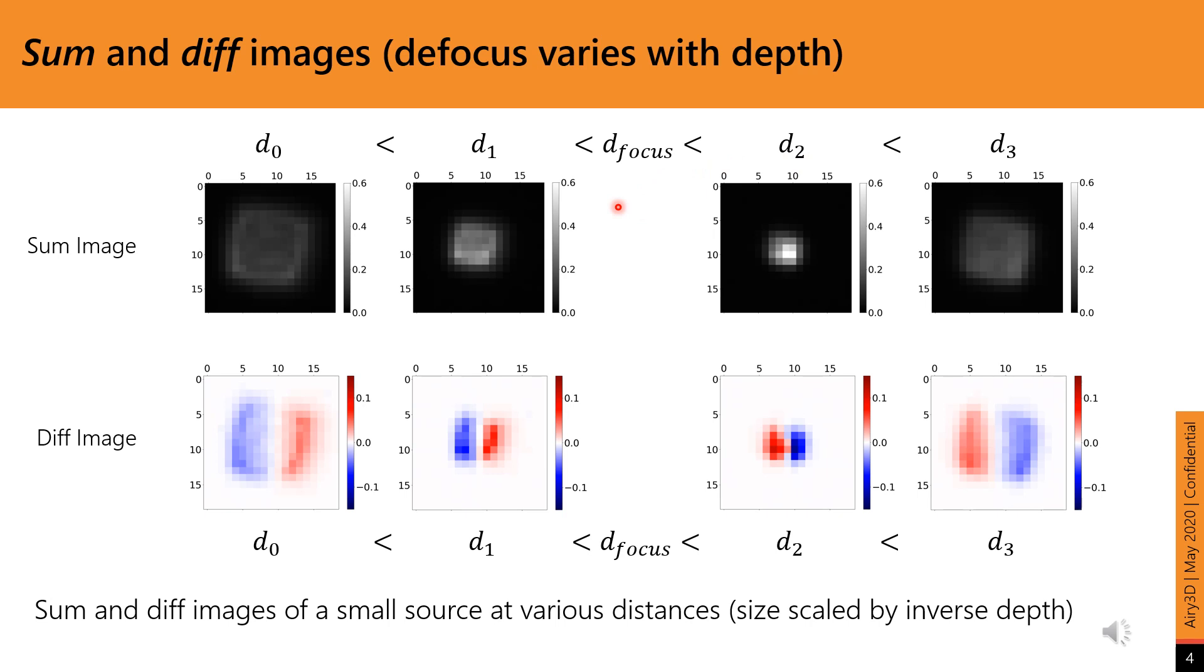The first row shows the sum images. Observe that the blur decreases from D0 to D1 as we move towards the plane of focus. And once we have crossed it and move further away from it, in D2 to D3, the blur increases again. Between pre and post focus, the blur kernel gets flipped left, right, up, down. For the sum image, this flip is not detected, since the sum kernel is symmetric, leading to a two-fold ambiguity.